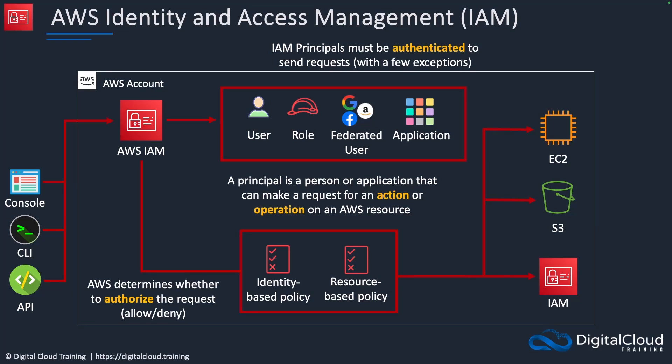Through authentication we prove we are who we say we are, then AWS determines what we are actually allowed to do. For example, performing API actions like run instances on EC2 — that launches a virtual server — get bucket retrieves information about buckets, and create user means to create a user in IAM. So the API actions are authorized on the AWS resources.